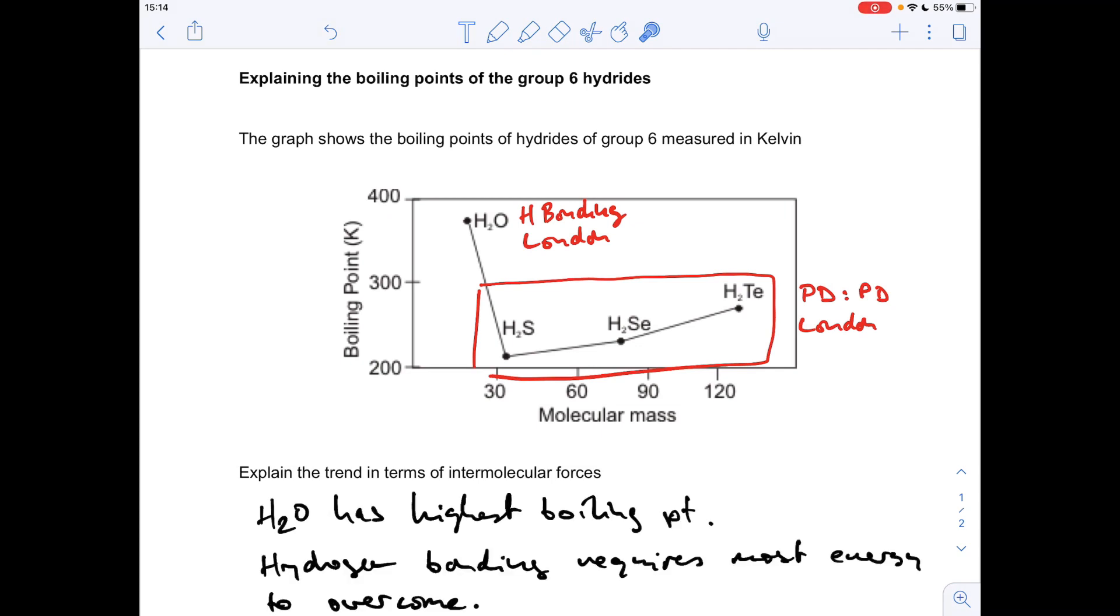It gets potentially tricky now because we might be thinking that these are increasing because the permanent dipole-permanent dipole interactions are increasing. Now that's not the case because as you go down any group in the periodic table, the electronegativity values actually decrease.